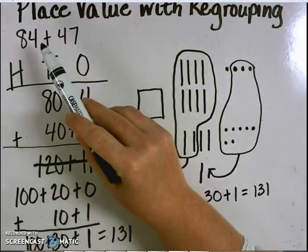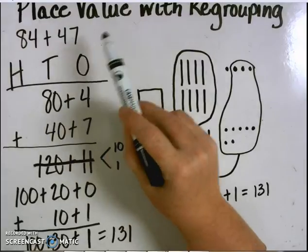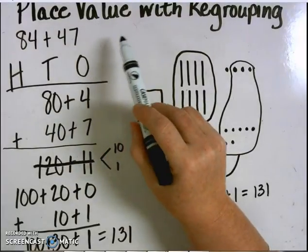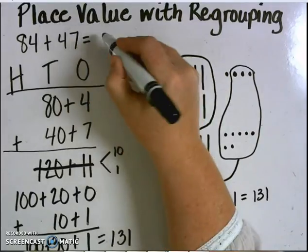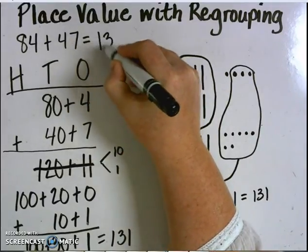We've shown in three different ways how you can come up with the answer for 84 plus 47 using place value with regrouping. 84 plus 47 equals 131.